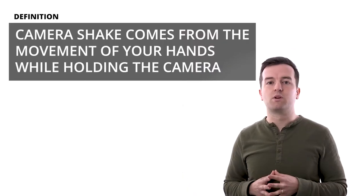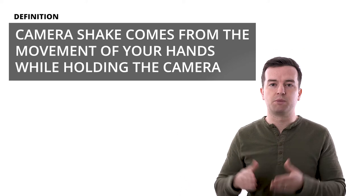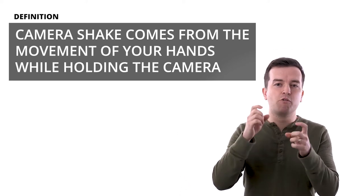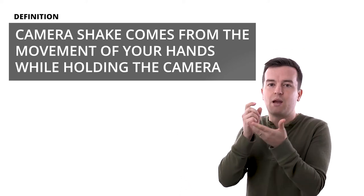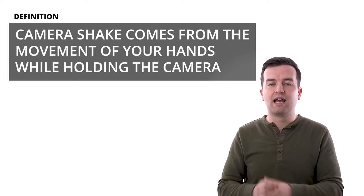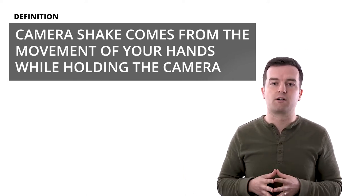You might also get what's called camera shake from a slower shutter speed. This is that micro-movement that is captured while trying to hold your camera still, and this is one of the most common issues for new photographers. Typically for beginners, we recommend shooting with a shutter speed faster than 1/80th or even 1/100th of a second to prevent that camera shake.